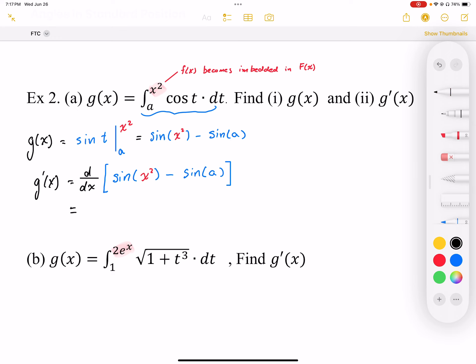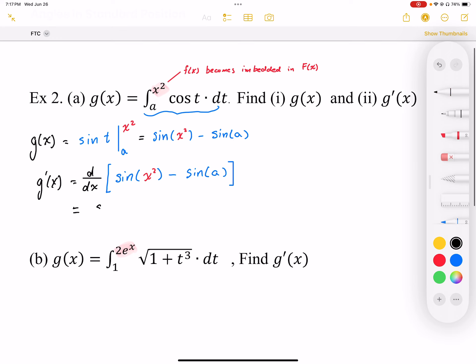And plugging in my x squared here, the derivative of this is going to work out to sine... Sorry, the derivative of sine is going to be the cosine. And we can see that I start with cosine, I end with cosine.